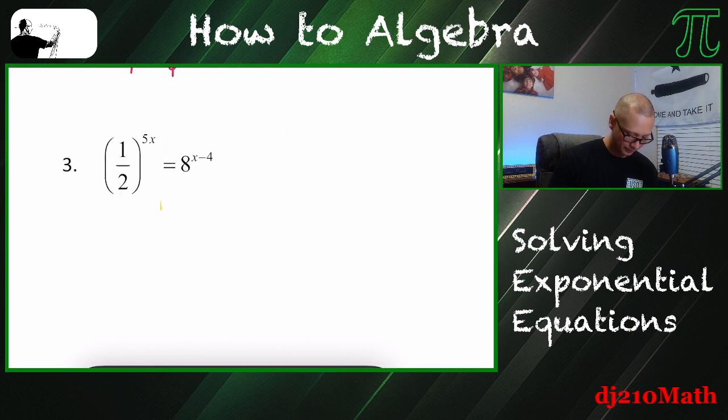Okay, the next idea is that when you have a fraction, right? I want to be able to write the fraction as just a whole number. I don't want a fraction. I want a whole number. So I'm going to use the fact that 2 to the negative 1 power is 1 over 2.